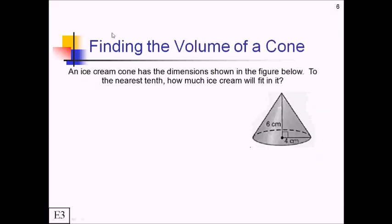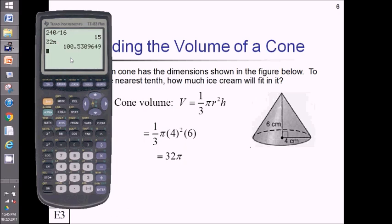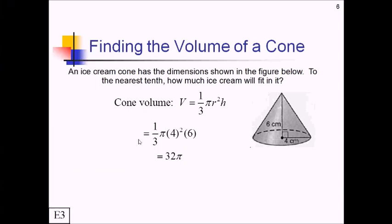For this next one, we've got a real-life problem. An ice cream cone has the dimensions shown in the figure below. To the nearest tenth, how much ice cream will fit in it? So this is definitely a volume problem. Now what's the volume of a cone going to be? Well, it's kind of like a pyramid with a circular base. So instead of doing one-third base area times height, we can do one-third pi r squared times height. Pause the video and see if you can get the volume out of this. Alright, so let's see what you plugged in here. For r, we've got 4. For h, we've got 6. Pretty straightforward on this one. So we've got one-third times 16 times 6. That's going to be like 2 times 16, so 32 pi. And plugging that in the calculator, I come up with 100.5, and that's going to be cubic centimeters.